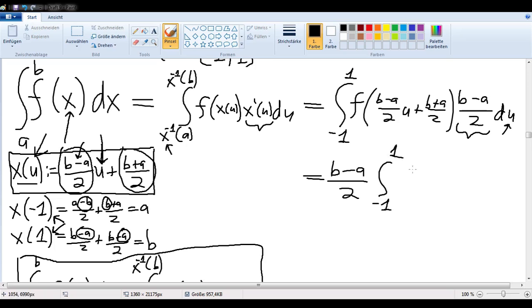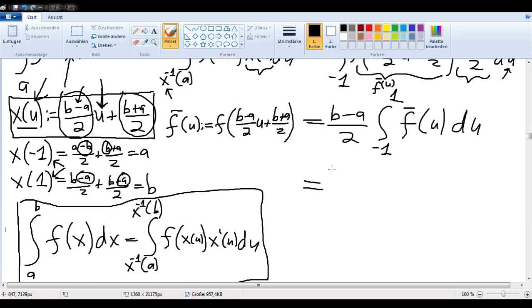And rewrite. I'm going to call that f bar of u. So I just have f bar of u du. In other words, f bar of u is defined as just being f of (b minus a) over 2u plus (b plus a) over 2. So now if we continue, we see that we're just about at our goal.